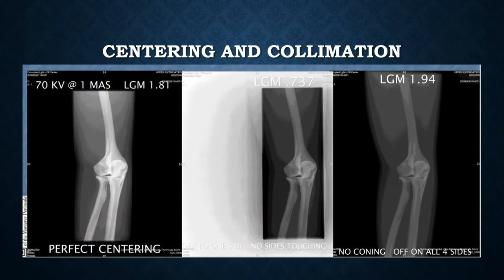Centering and collimation will make a big difference on your index numbers. With perfect centering on the left, the LGM is 1.81. On the far right, this is the same phantom elbow with no collimation — you can see the LGM number was increased. If you take this image off-centered on the IR plate, LGM is 0.737. Centering and collimation play a big factor in what your DI numbers will read.